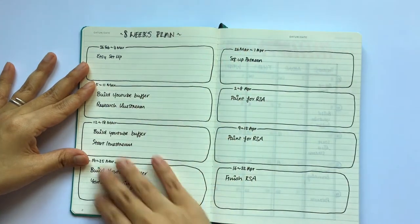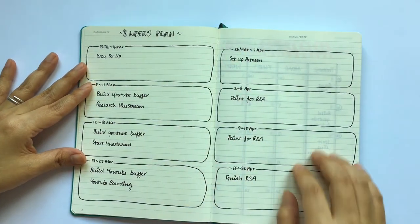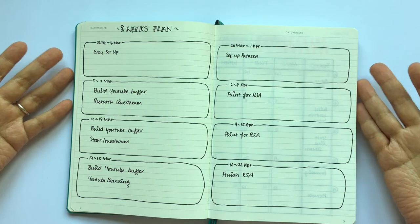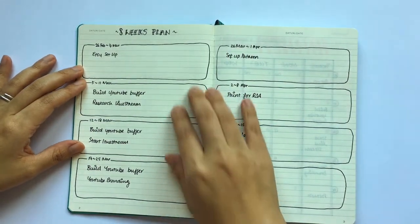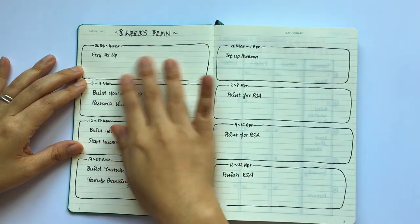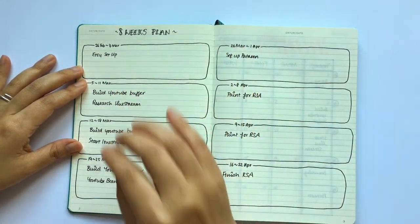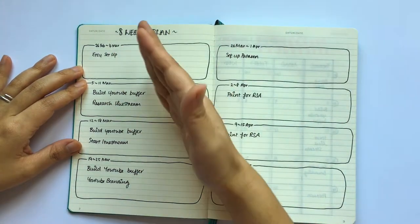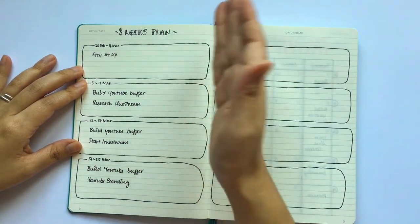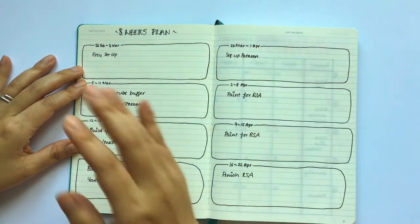So let's get on with the spreads themselves. Not much has changed from my February setup in that I start off the month with the eight weeks plan. Again, this is just a quick reminder what I'm supposed to be doing each week and it just keeps me on target to where I want to be by the end of the year.